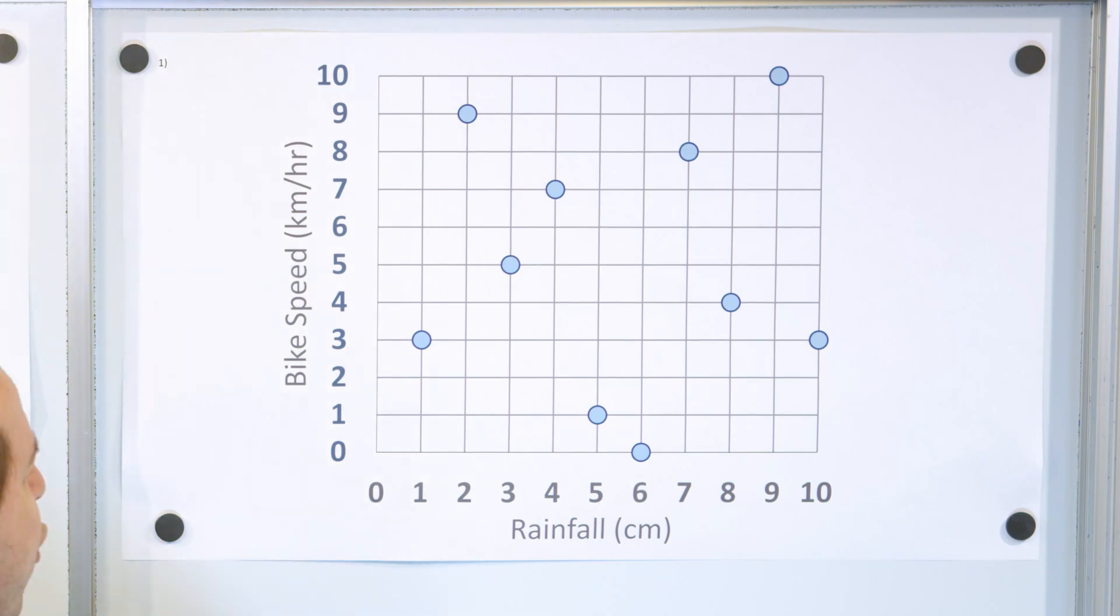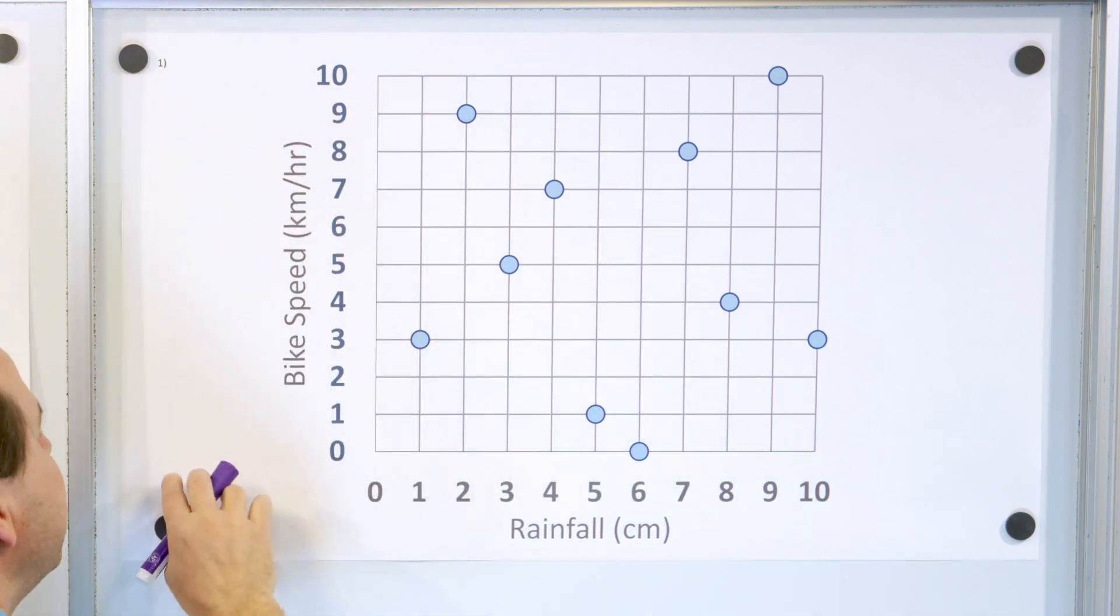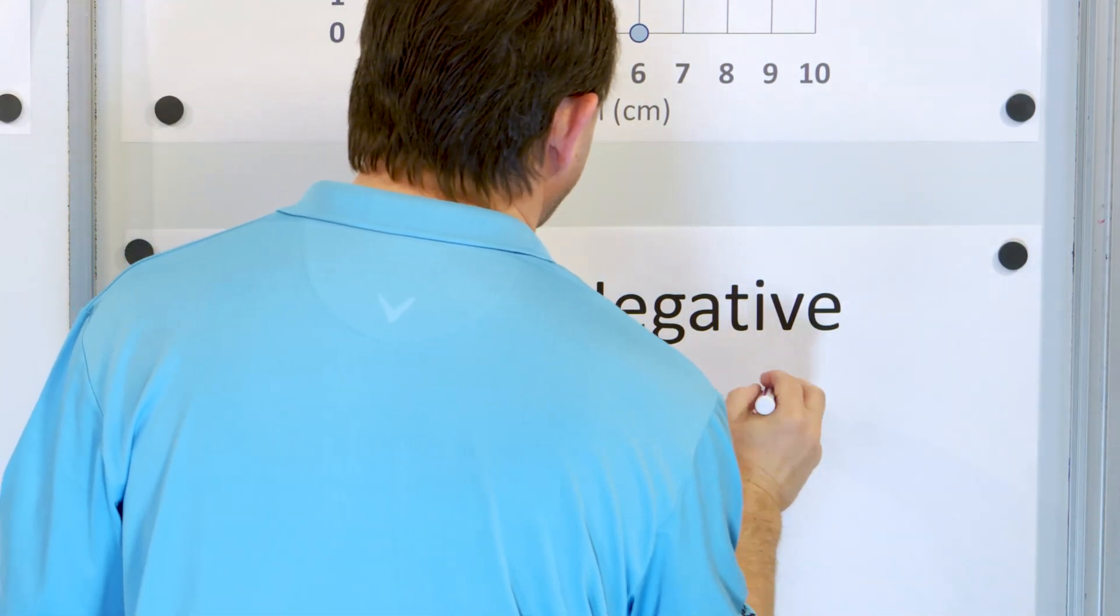In order for the data to be correlated, we need a clear uptrend or a clear downtrend. As we graph the data, we don't see that. So it does not appear there's any correlation, we're going to say no correlation.